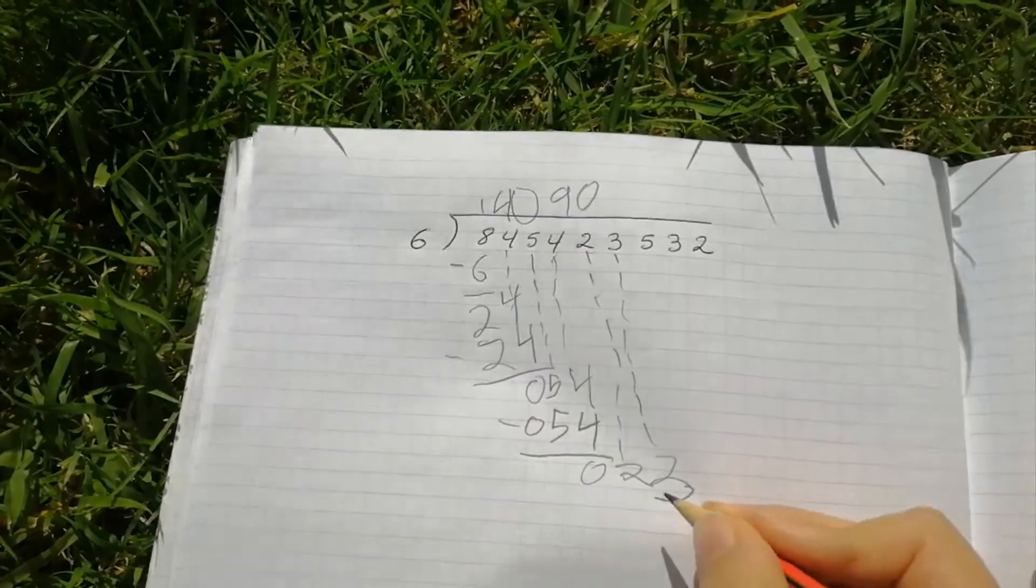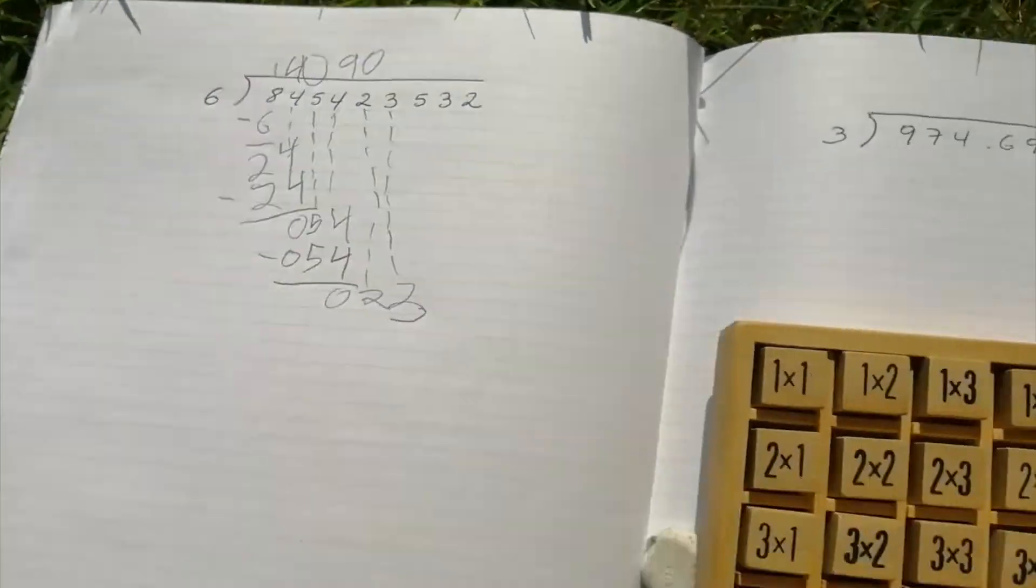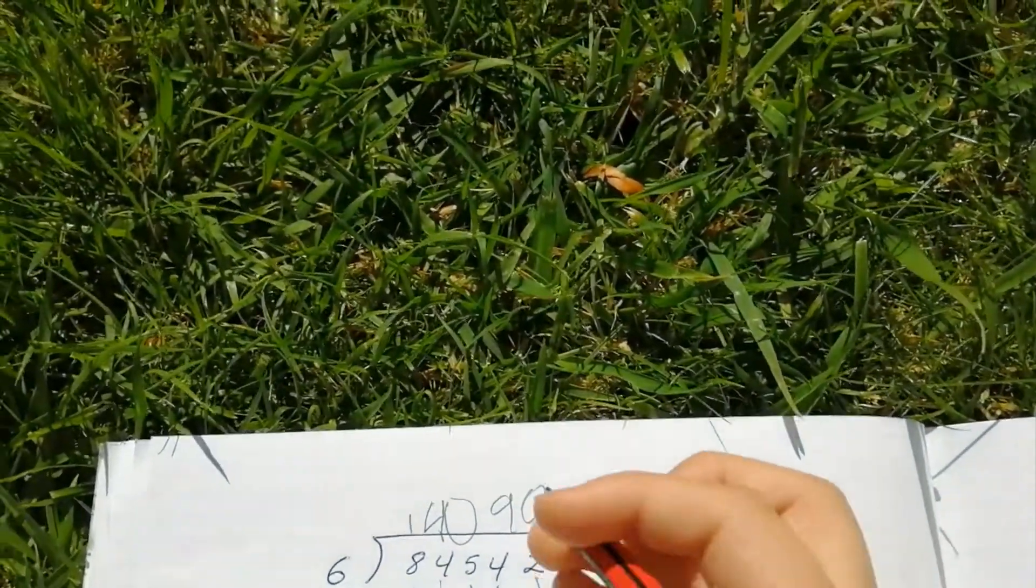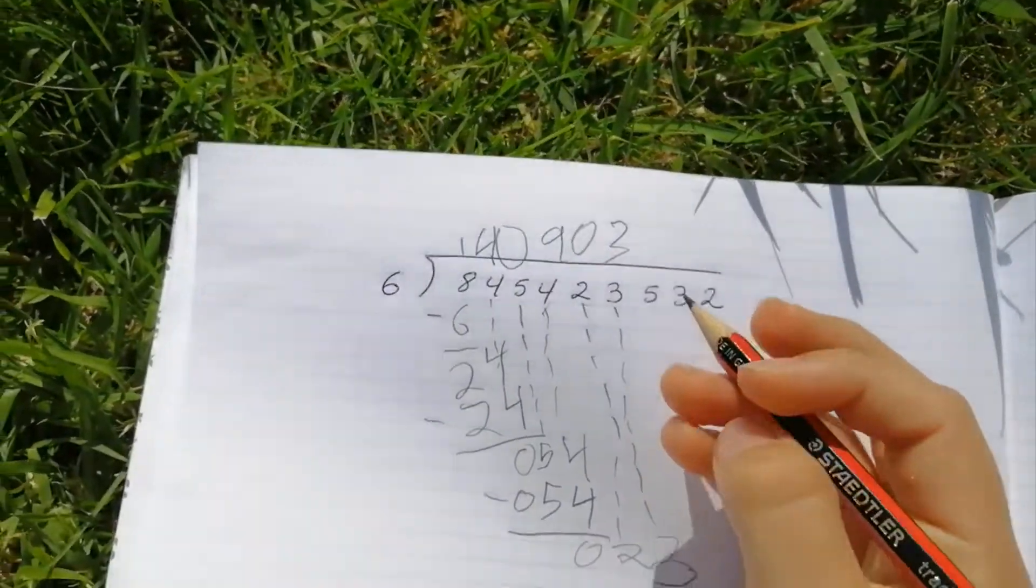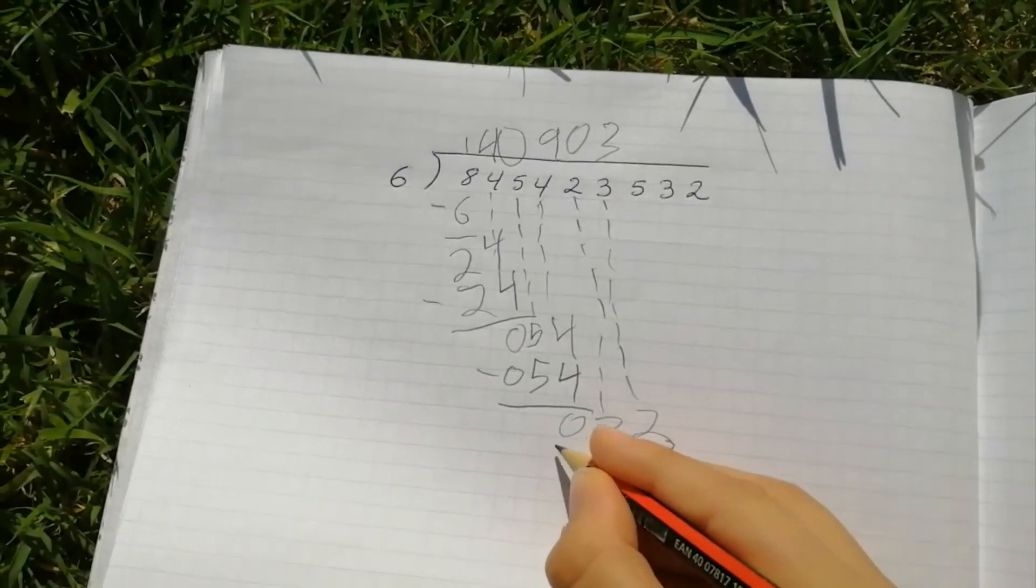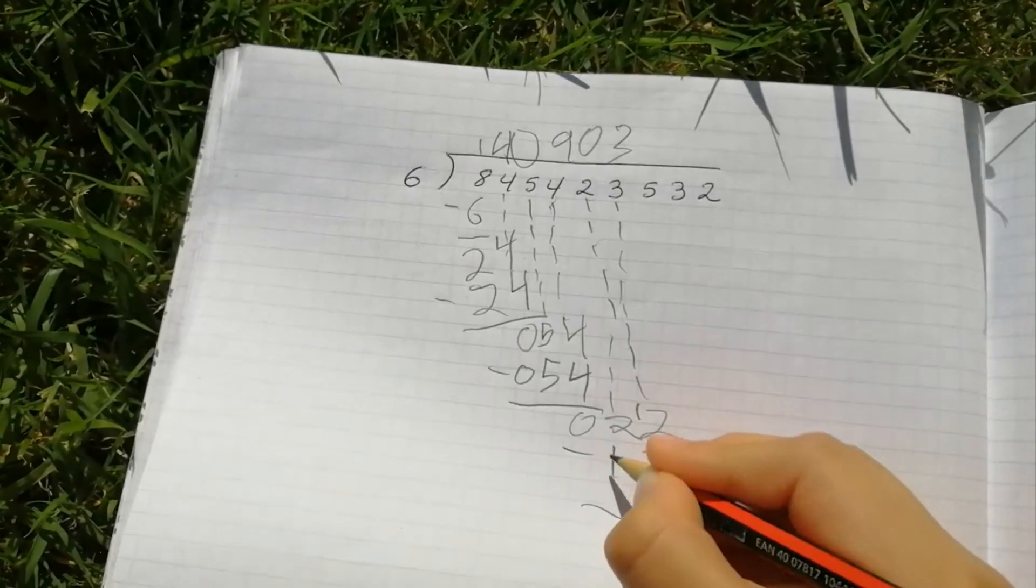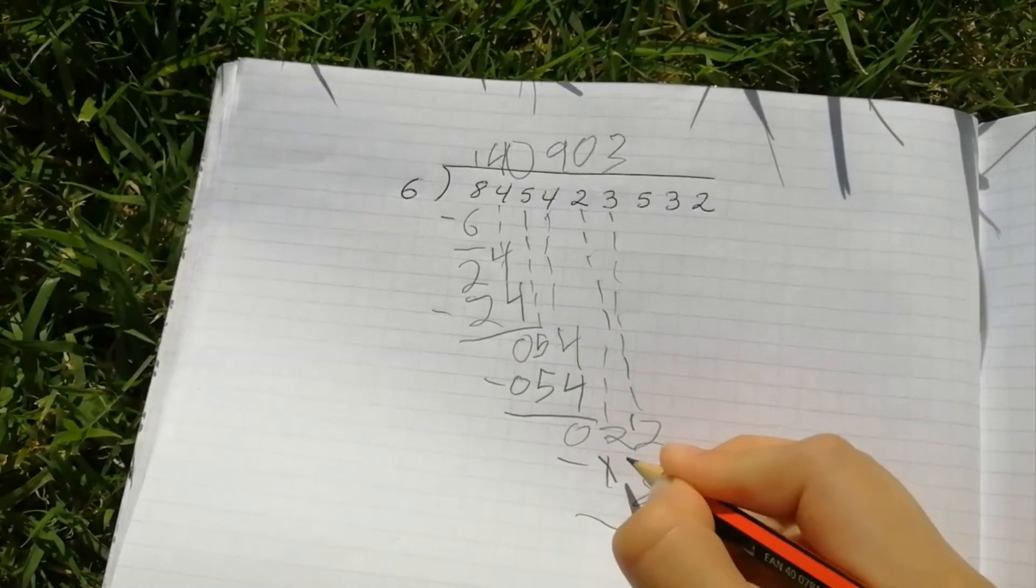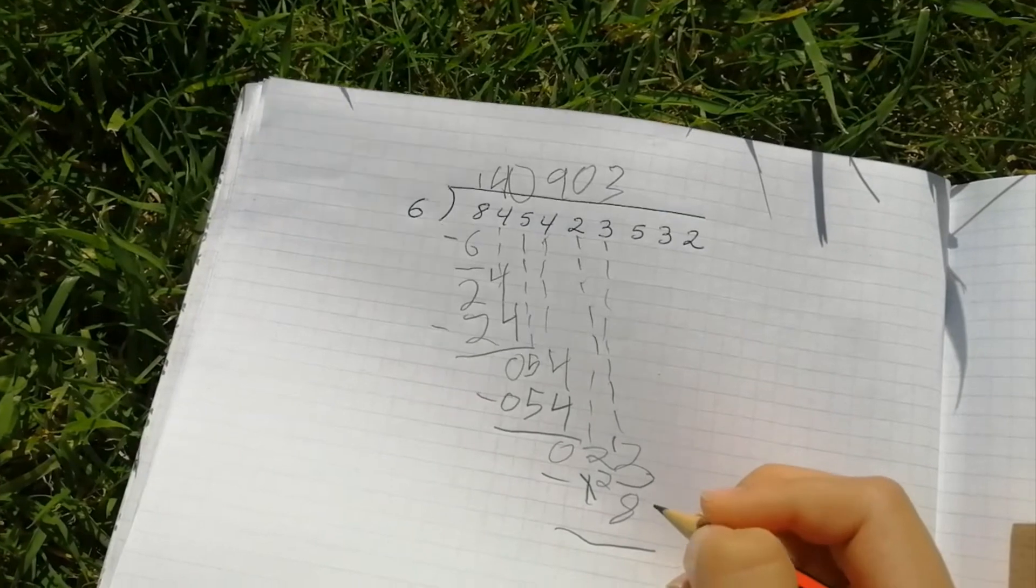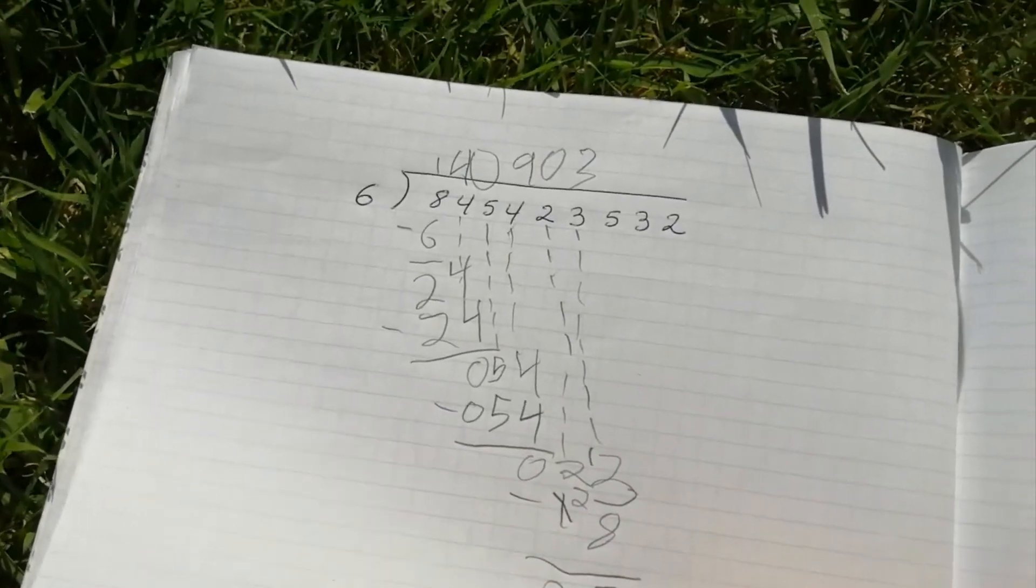And six. How many sixes are in twenty-three? That is three. Three sixes. So put three here. And six times three is eighteen. So put minus eighteen. And you put a one right there. And put across two right there. And what is in between thirteen and eight? There is five. Five numbers. So put five zero.